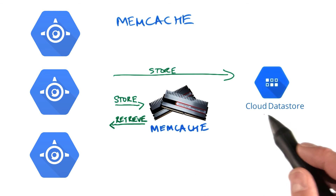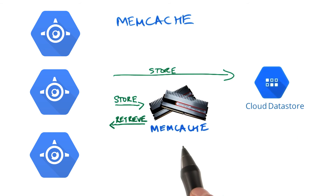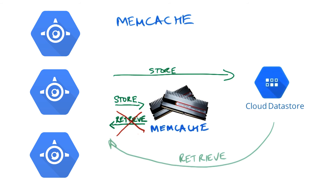The difference between memcache and data store, however, is that memcache is a cache. This means that the App Engine platform can decide to free memory at any time, in which case the retrieve operation will fail. So your application code needs to be prepared if this happens, and in that case retrieve the data from data store.